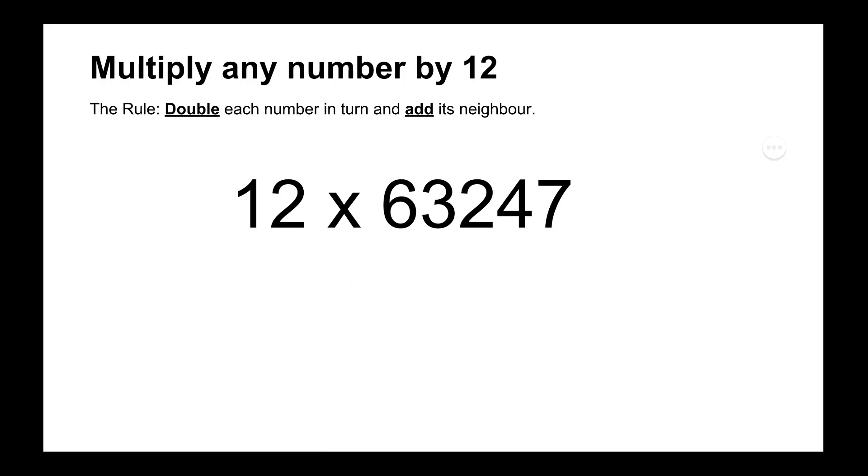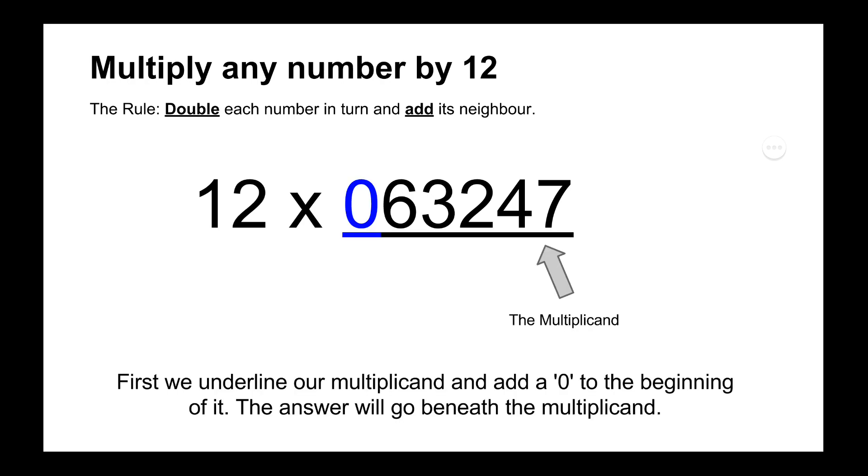So we'll just do another one. This time we'll deal with some slightly bigger numbers so that we can carry the 10s and add a dot just like we introduced into the multiplier by 11. So just as we normally do we add a 0 to the start of it and then we underline the multiplicand.